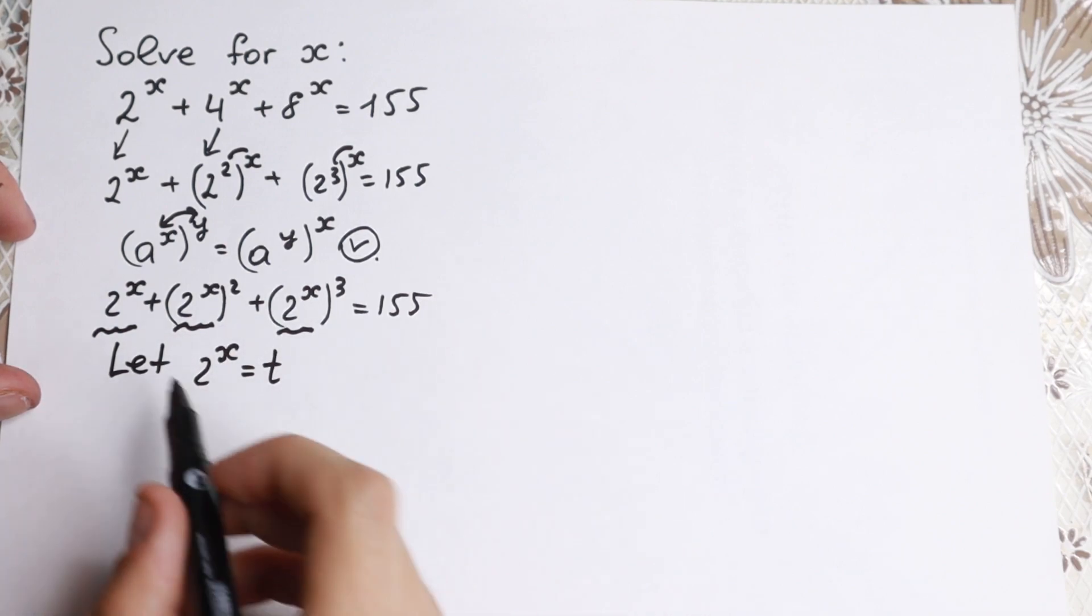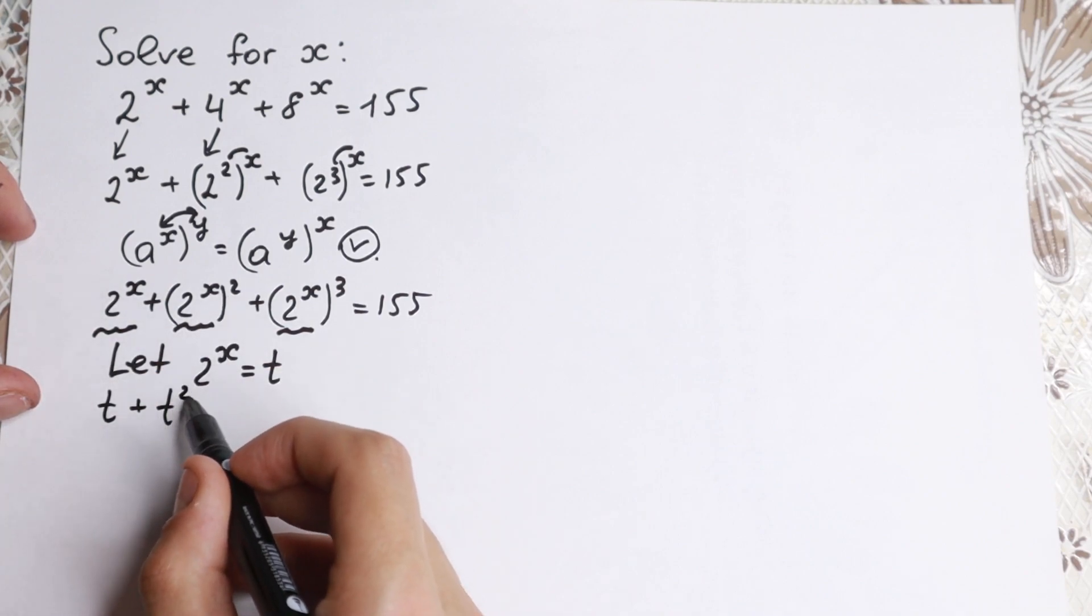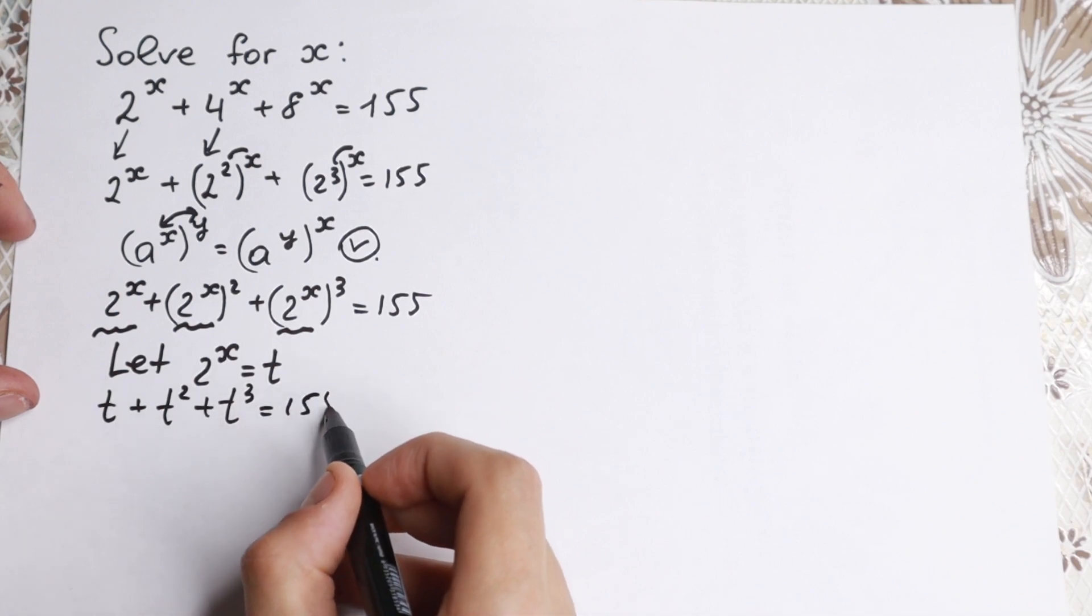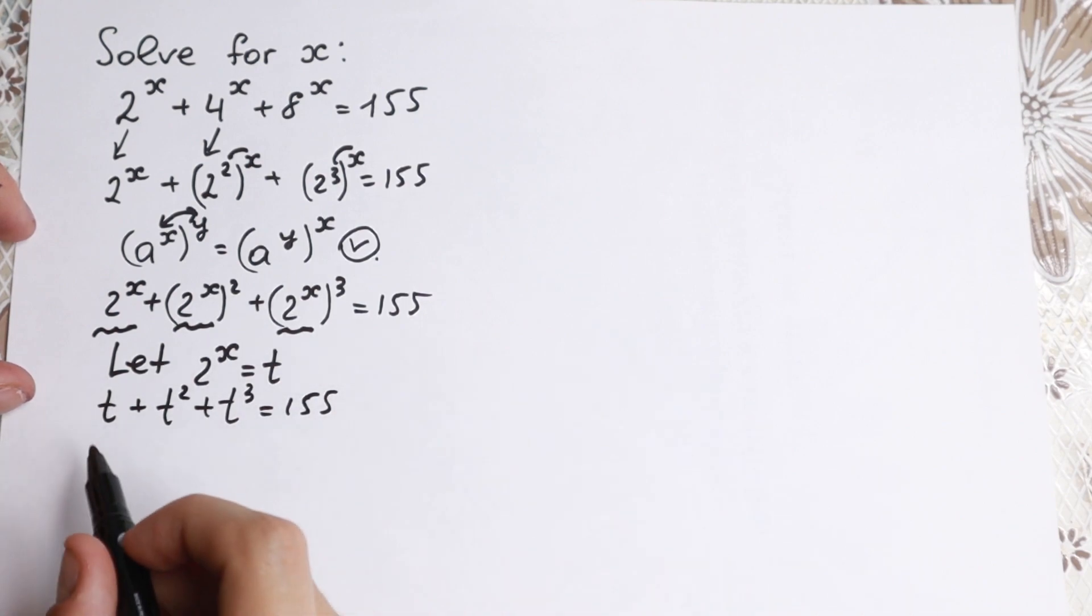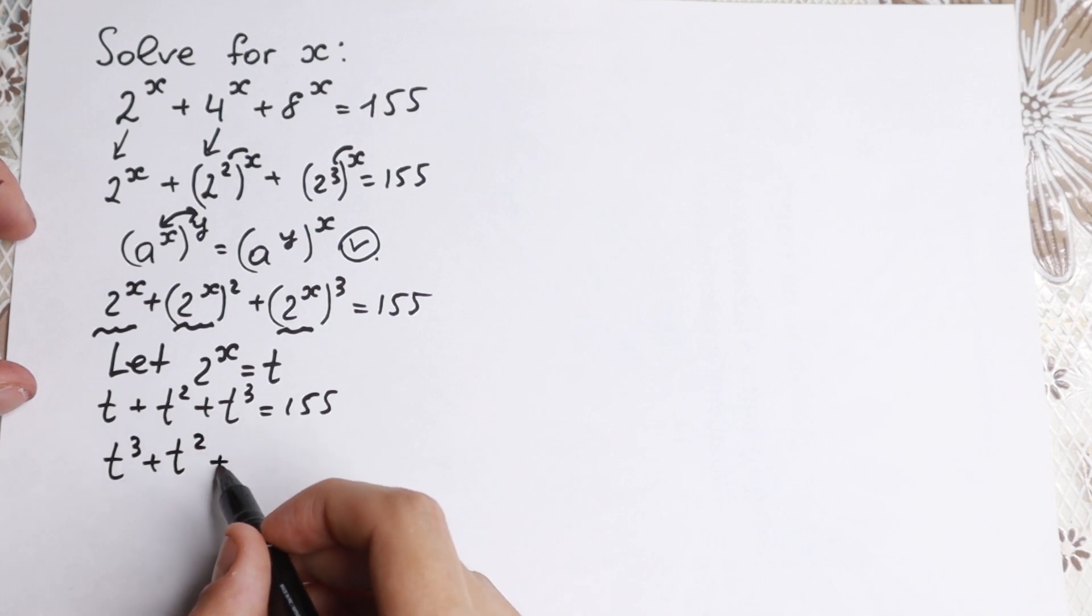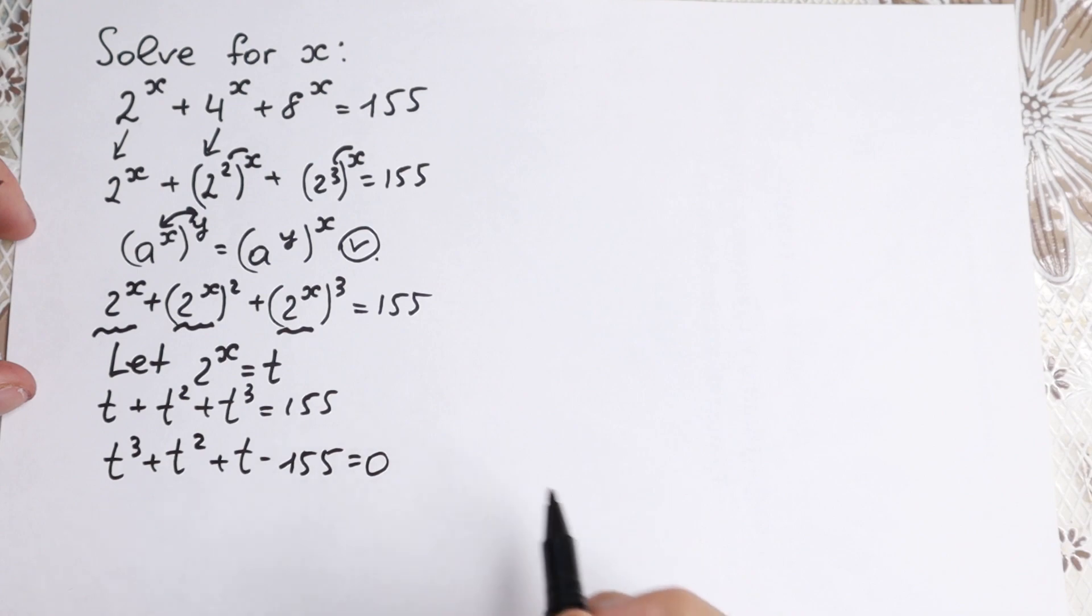What equation we will have? We have firstly t plus t squared plus t cubed equal to 155. And mostly we need to rearrange this element, because we like this order: t cubed plus t squared plus t minus 155 equal to zero.